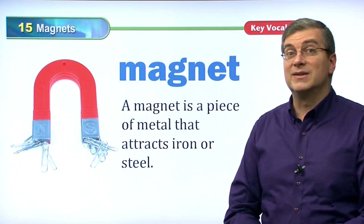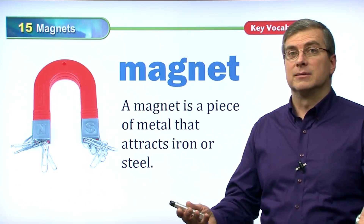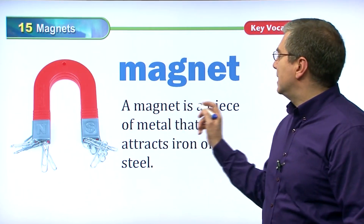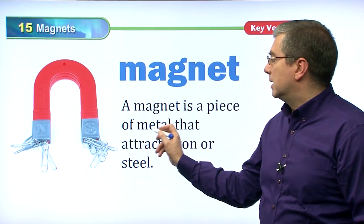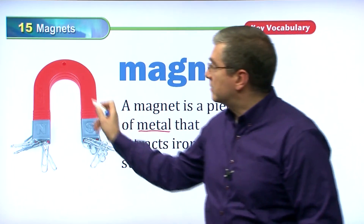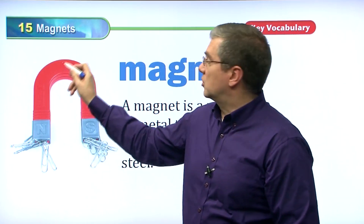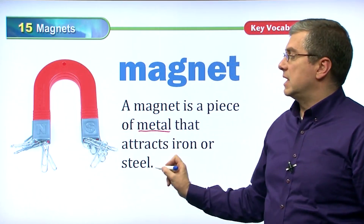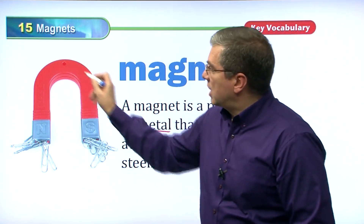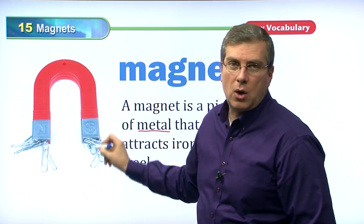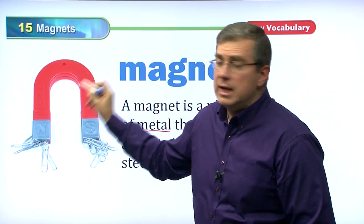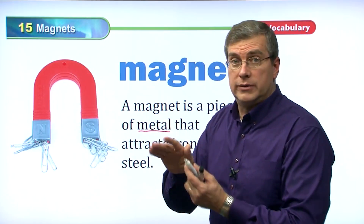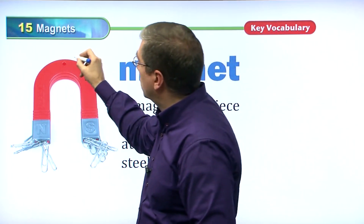Our first word is magnet. A magnet is a piece of metal — like this piece of metal — that attracts iron or steel. Some magnets are shaped like this. What shape do we call this? This shape looks like the shoe that a horse wears.